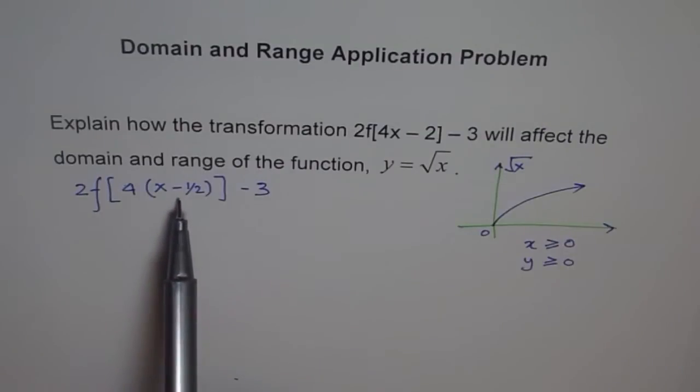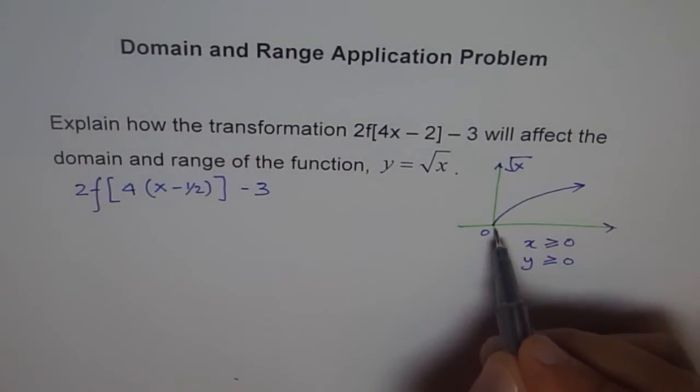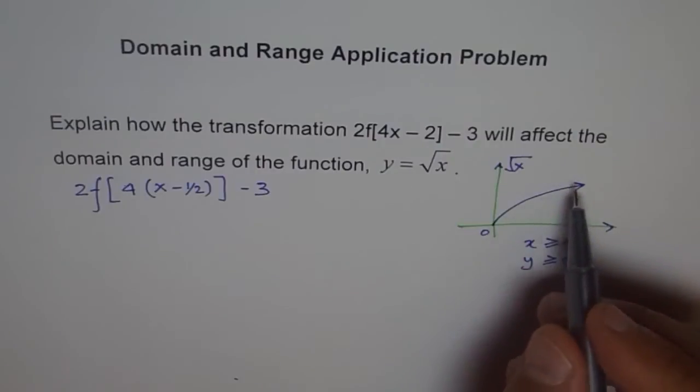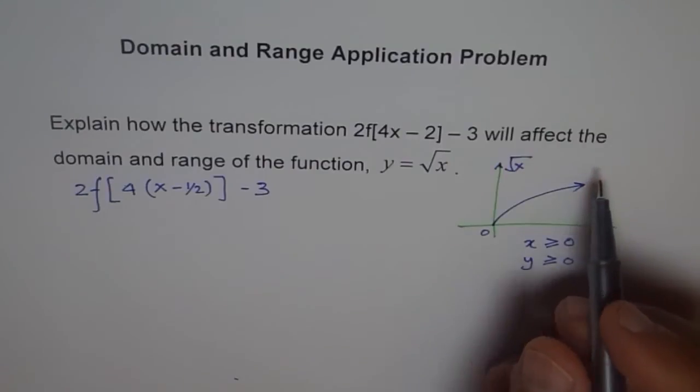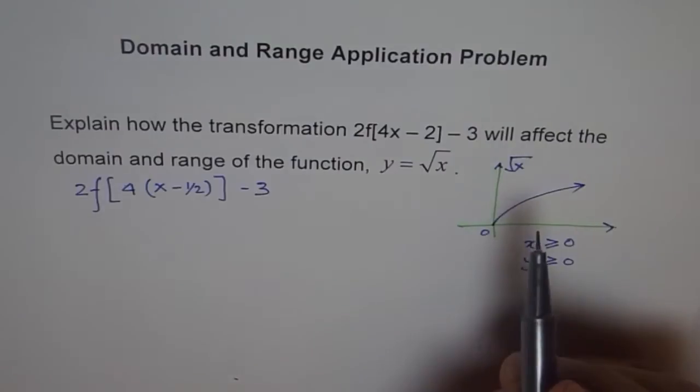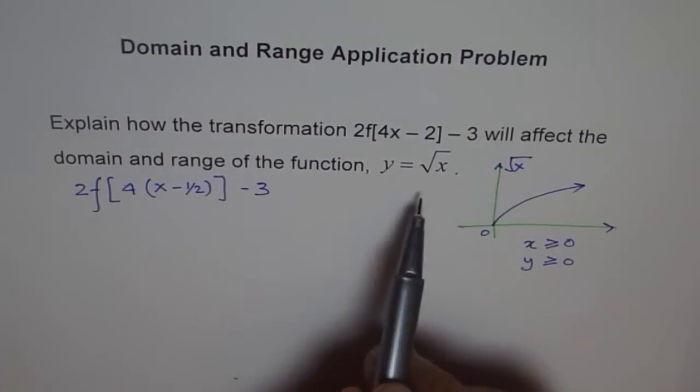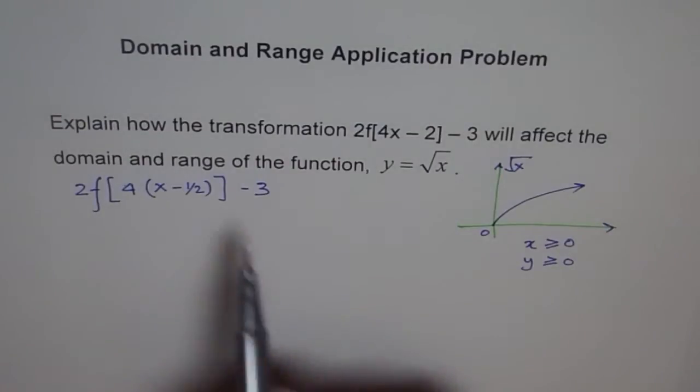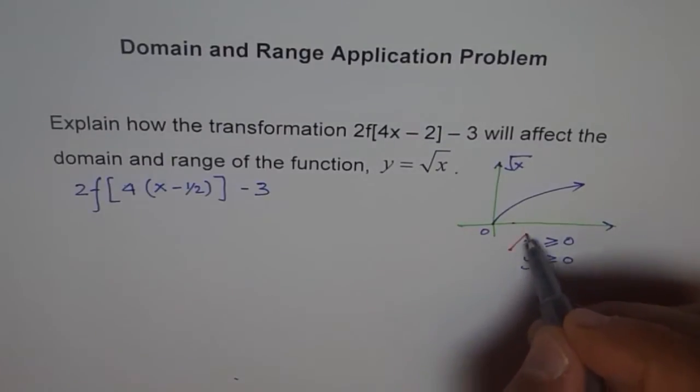This horizontal translation of half unit to the right, and then a vertical translation of three units downwards. So basically what is happening here is that the function moves. Yes, of course it gets compressed and stretched, but that really doesn't affect domain range. So what really affects domain range is horizontal and vertical translations for this function.